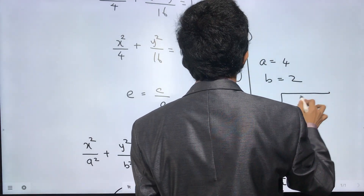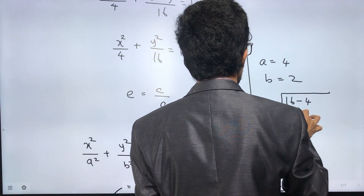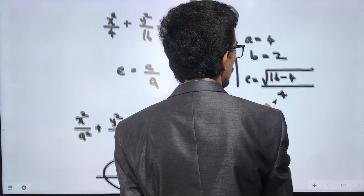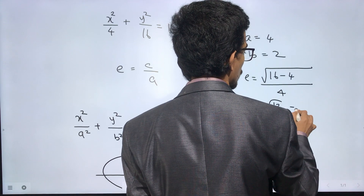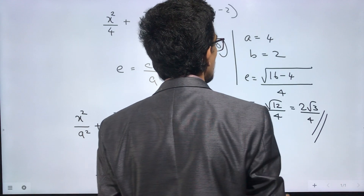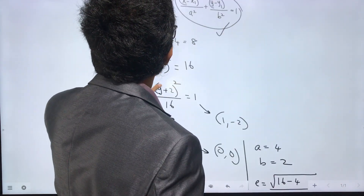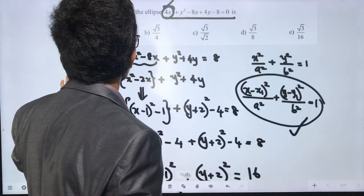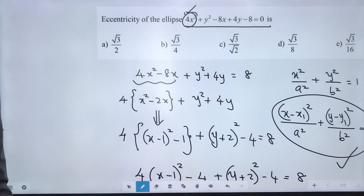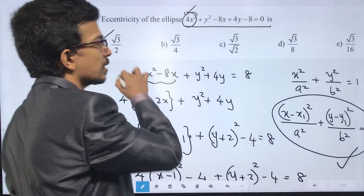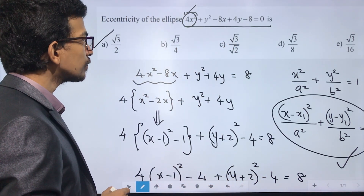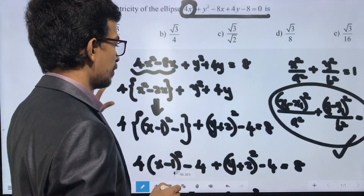The eccentricity is the square root of (16 minus 4) divided by 4. This becomes root 12 divided by 4, which equals 2 root 3 divided by 4, which simplifies to root 3 by 2. So root 3 by 2 is the answer for the eccentricity of this ellipse.